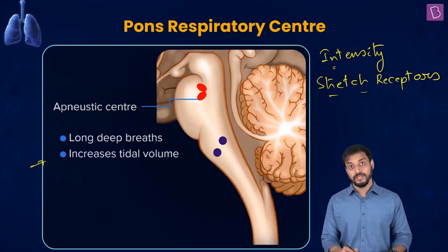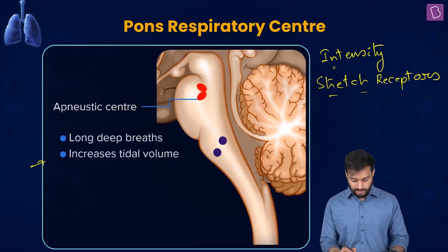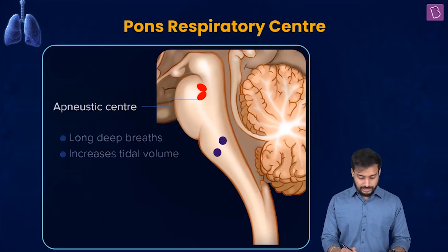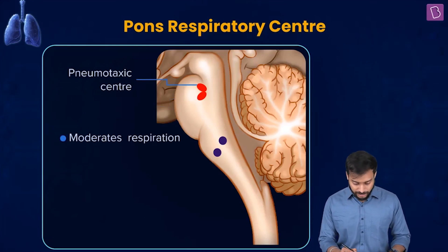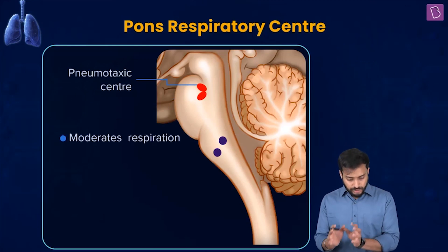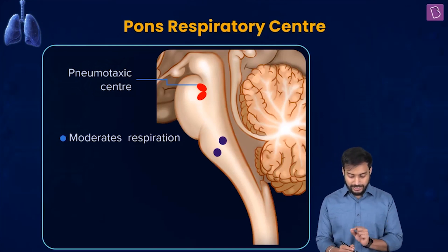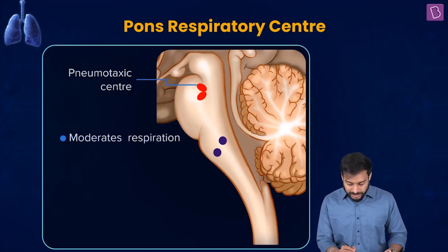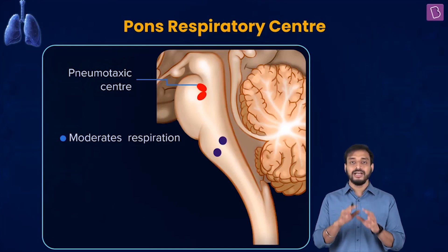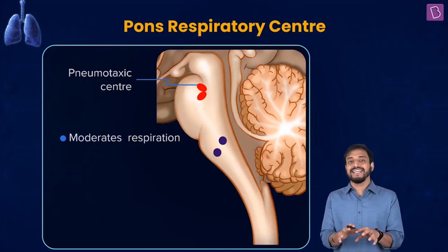The pneumotaxic center also signals the apneustic center to regulate it. The pneumotaxic center is another center present in the pons respiratory center, and it can moderate the respiratory functions — moderate the functions of the respiratory rhythm center.